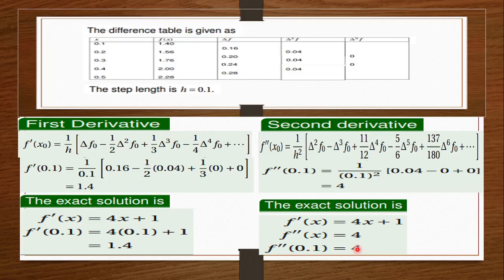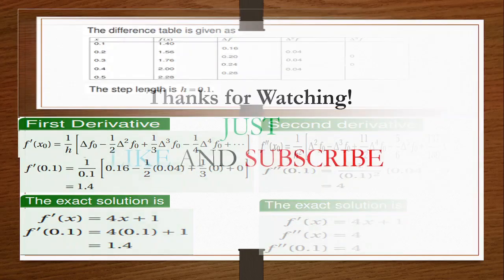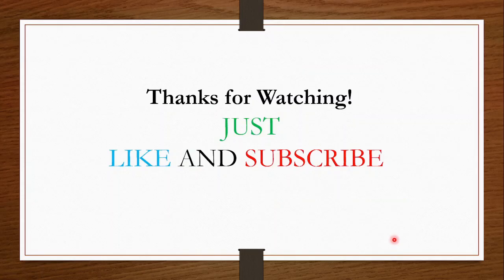So again with Newton's Forward Difference, you just find the difference between the f(x) values and move forward. After that, take the values and put them into the formula. For the first derivative, pick the values, put them in the formula, and find your answer. Same for the second derivative — take your values from the table, put them in the formula, and there you go. It's pretty straightforward. See you in the next video — don't forget to like and subscribe, and leave any questions in the comment section!